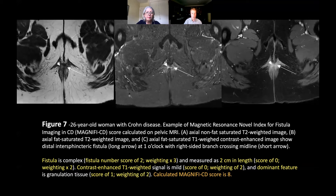Finally, we look at the T2 signal of the fistula, again compared to the adjacent vessels, and this is a little bit increased, so this got a score of two as well. When you add up all these various factors, this patient had a Magnify CD score of eight. In the paper we'll go through other scores as well, explaining how we calculate these and how we can use them.